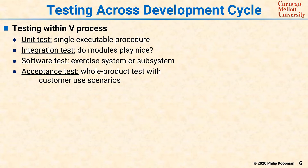At the top right of the V is acceptance test, which has to do with whole product tests of both hardware and software together, mostly looking at customer use scenarios, and those are generally almost entirely black box tests. But you also typically see some smoke tests and some exploratory testing just to make sure that the requirements seem to be complete and accurate in terms of customer usage scenarios.